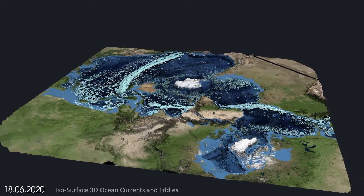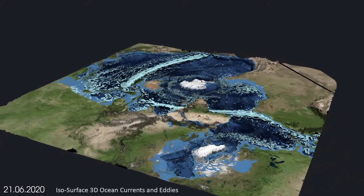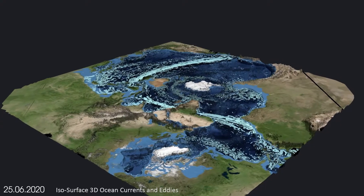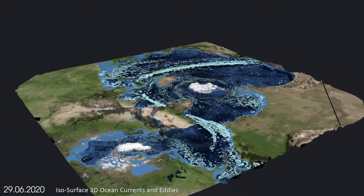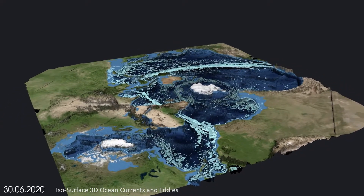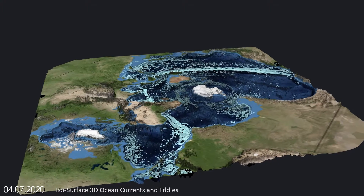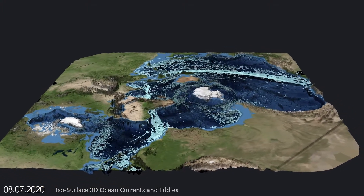The eddies in the ocean can be up to 100 km wide and extend several hundred meters deep into the ocean. Here we see an isosurface outlining the strongest currents, allowing us to sense their width and depth.